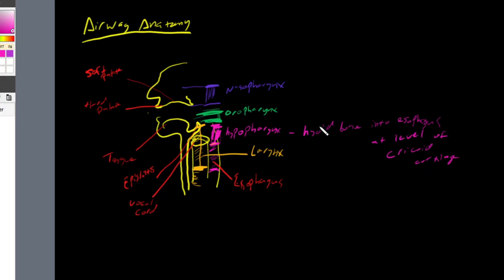One last quick review: our nasopharynx is from the base of the skull to the soft palate. Our oropharynx is from the base of the tongue to the epiglottis. Our hypopharynx is from the hyoid bone down into the esophagus, finishing at the level of the cricoid cartilage. And our larynx starts at the epiglottis and goes all the way down to the cricoid cartilage.